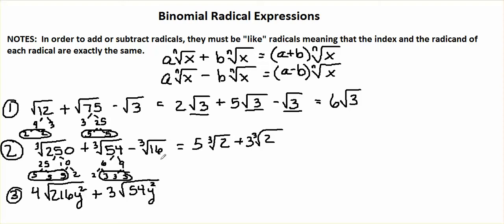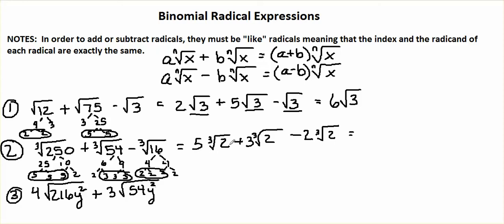Now let's take a look at 16. 16 factors into 4 times 4, and each of those factors into 2 times 2. So we have a nice group of three 2s right here. We'll go ahead and pull one of those 2s out and leave that last one under our radical. Now we have like radicals — they all have an index of 3 and the number 2 underneath. So we can add and subtract the numbers in front: 5 plus 3 is 8, minus 2 is 6. We now have 6 cube root of 2.